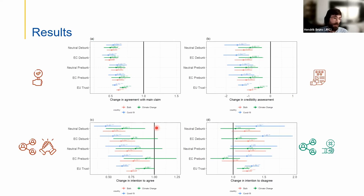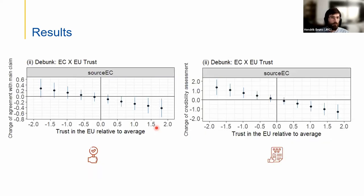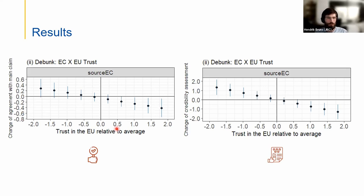Regarding the original aim — whether debunks from the European Commission are more effective for people who highly trust it — contrary to our expectations, there appears to be no big interaction effect. The European Commission can mostly debunk and prebunk irrespective of the recipient's trust in the EU, which is good news. Debunks can be less effective for people with low EU trust and more effective for high trust, but this was only for one or two of the four outcome variables — it's not a consistent pattern.